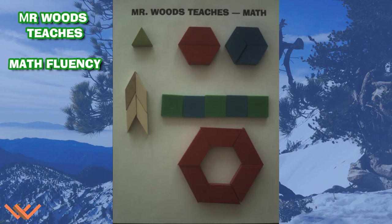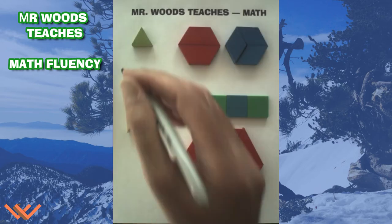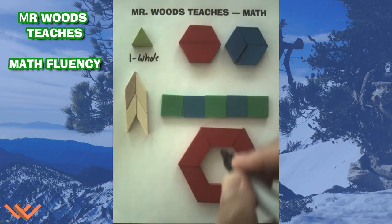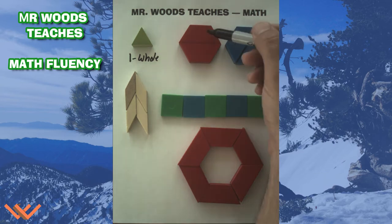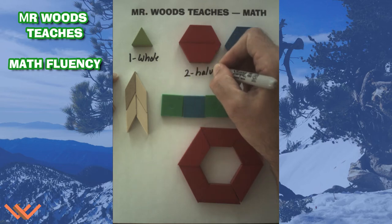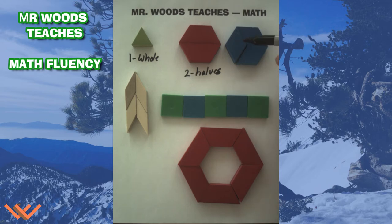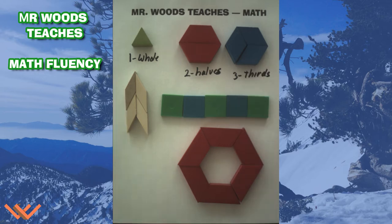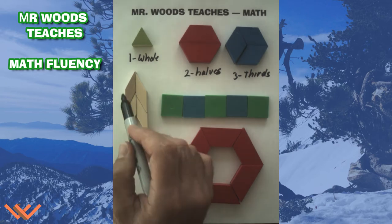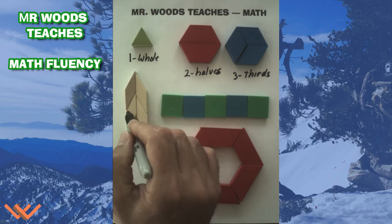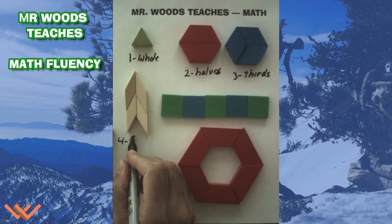Here we have one piece, so that's just one whole piece. Here we have two trapezoids, so that's two halves. We have a hexagon here as well, and it has one, two, three — so we have three thirds. These diamonds here look like they're all about the same size. There's one, two, three, four — so we have four fourths.